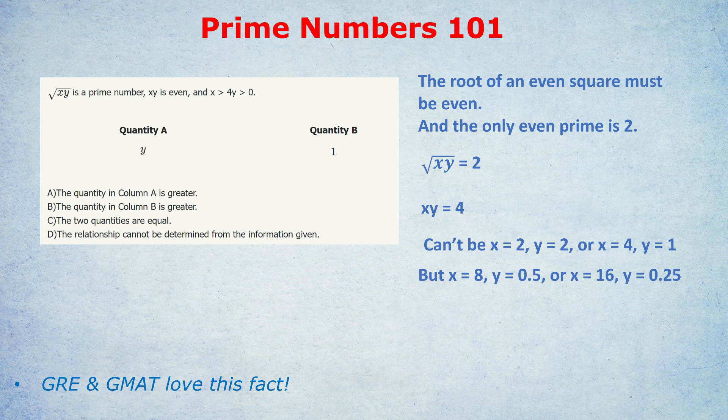Some students won't like that picking numbers approach and will say I'm going to do this algebraically. We have x times y equals 4. Let's isolate x so we can substitute it into the inequality. Divide both sides by y: x equals 4 over y. Substituting into the inequality, 4 over y must be greater than 4y. Cross multiply - we can do this without flipping the sign because y is positive. We get 4 is greater than 4y squared. Divide by 4: 1 is greater than y squared. So y is less than 1, and Quantity A is smaller than Quantity B.